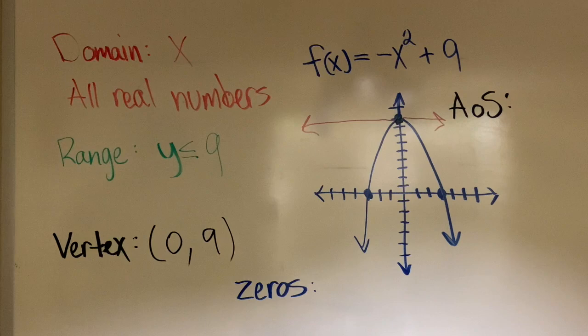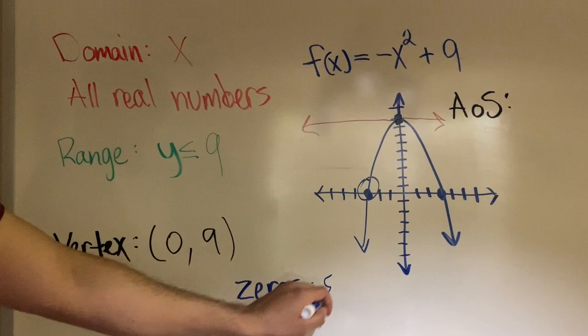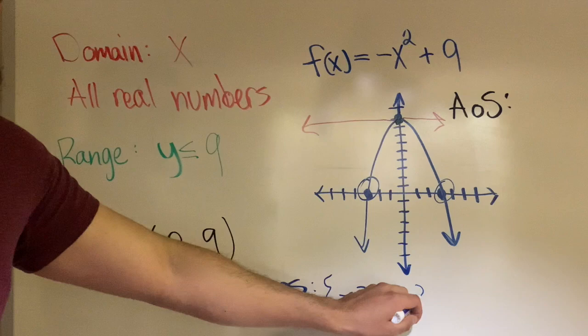The zeros are x-intercepts. So I'm going to look at this and I can see there's an x-intercept right there, which is -3. So I'm going to write it down as a solution set: {-3}. And my other solution would be positive 3. So I'm going to do a comma, positive 3. Close the solution set. And those would be my zeros.